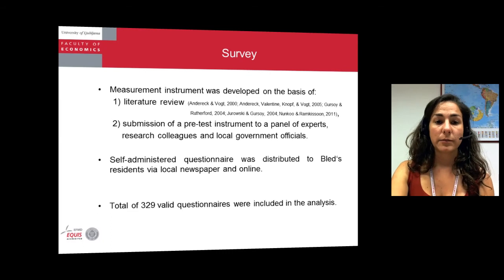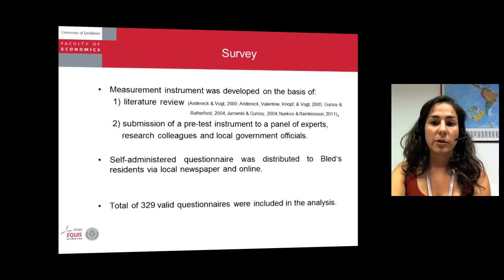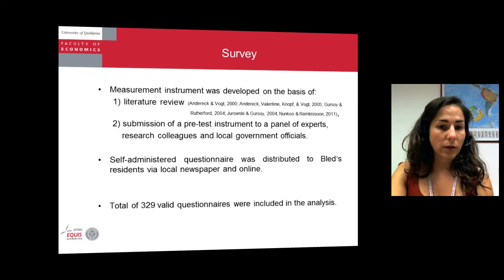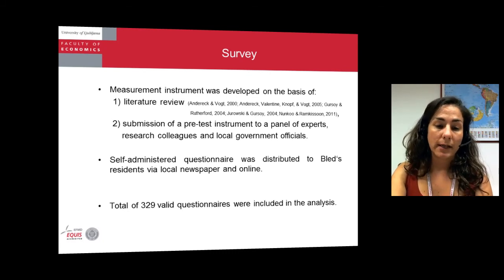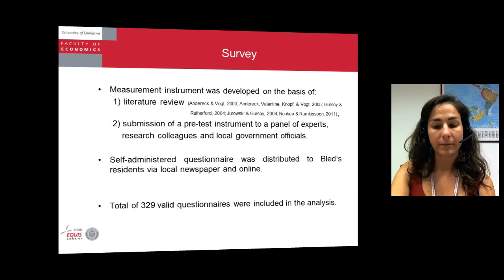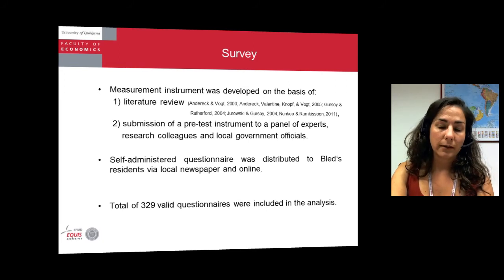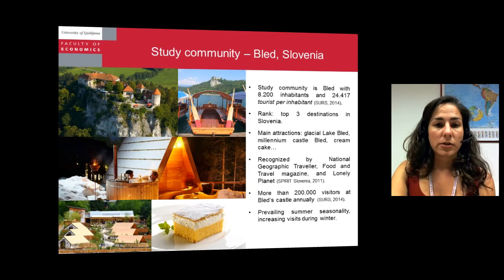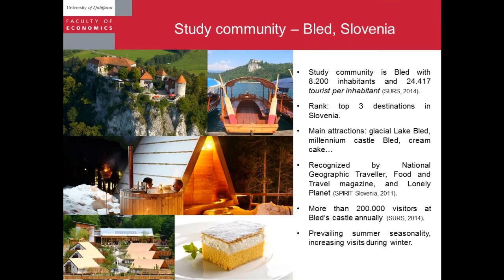The self-administered questionnaire was distributed to Bled residents through the local newspaper. Since in a local newspaper you can only print one questionnaire, we also invited residents to complete the questionnaire online. In the period from 31st of January to 2nd of April, we managed to get 329 valid questionnaires to include in the further analysis.